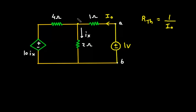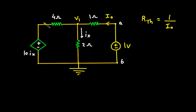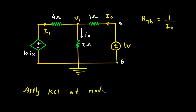Let's assume this is node V1 and this is the reference node with 0V. Now here we will use nodal analysis to find the value of IO. Let's say this is current I1. Now apply KCL at node V1.